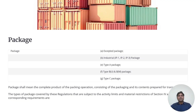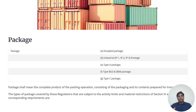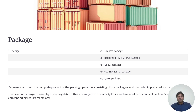Now coming to the packages, there are different packages: the excepted packages and the industrial packages. The industrial packages have three sections — IP1, IP2, IP3 — and type BU and type BM packages, and type C packages. The packages shall mean the complete product of packaging operations consisting of the packaging and its contents prepared for transport. Different packages carry different kinds and amounts of radioactive material.